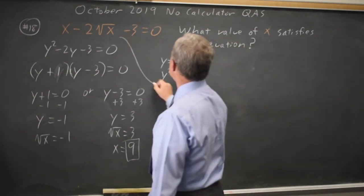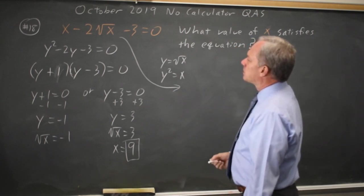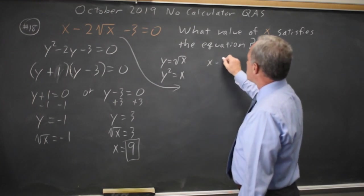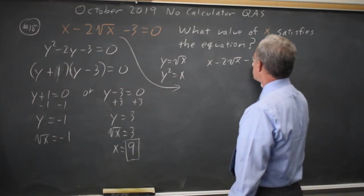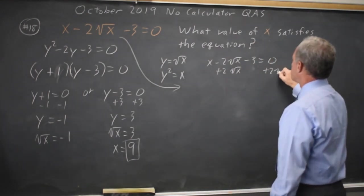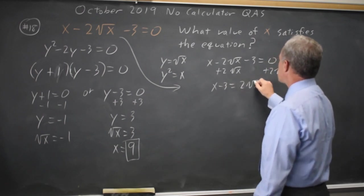Alternatively, I could solve for root x and then square both sides of x minus 2 root x minus 3 equals 0. Let's add 2 root x to both sides. So x minus 3 equals 2 root x.